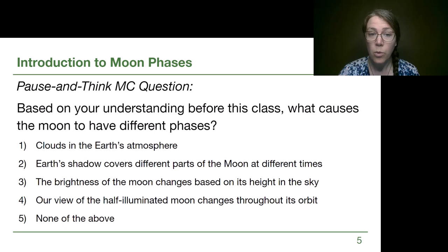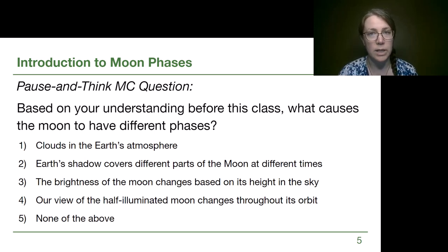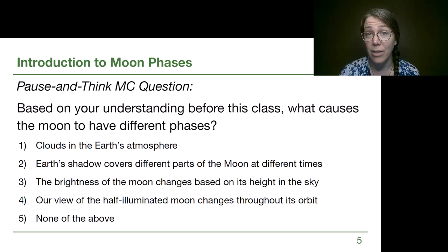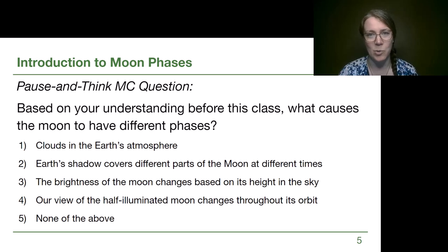Anytime we're trying to do these multiple choice questions, we're always trying to apply critical thinking. Sometimes that means ruling out options we know have to be wrong, even if we're not feeling confident in what option has to be right. I'm hoping that a lot of you ruled out option number one — clouds and Earth's atmosphere — because we can get a moon calendar for the entire year, and we can't even predict clouds for tomorrow, let alone next week. So it can't be clouds causing moon phases, because we can predict them for years and years.